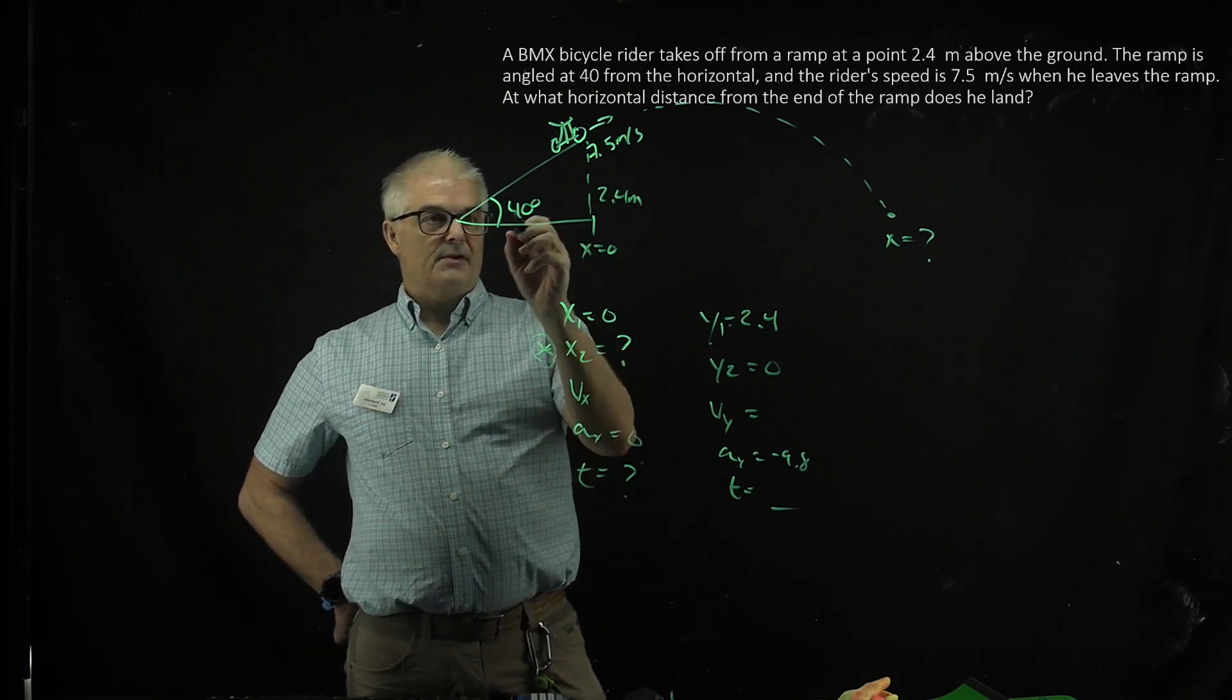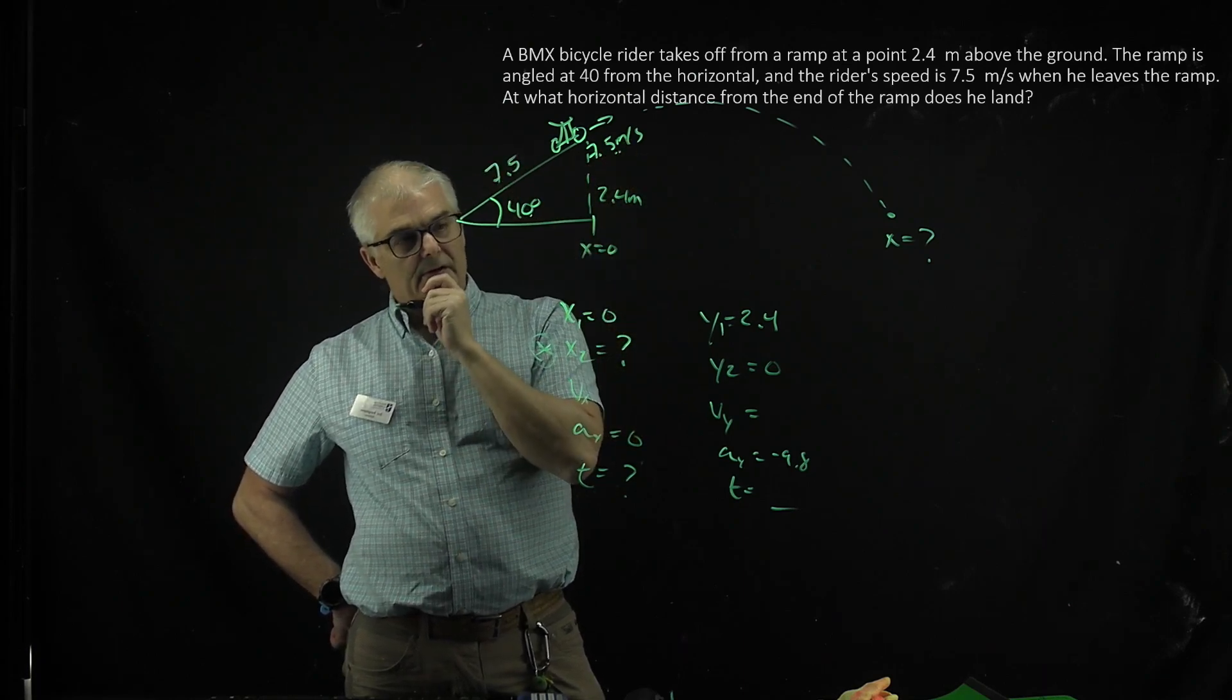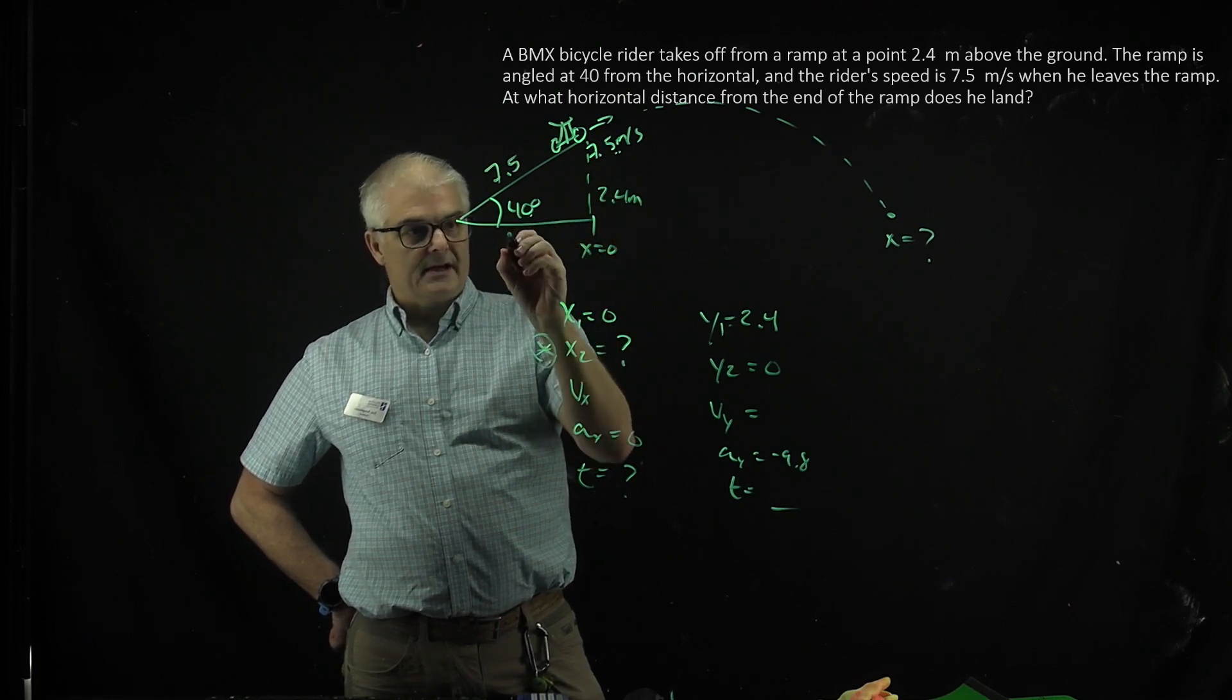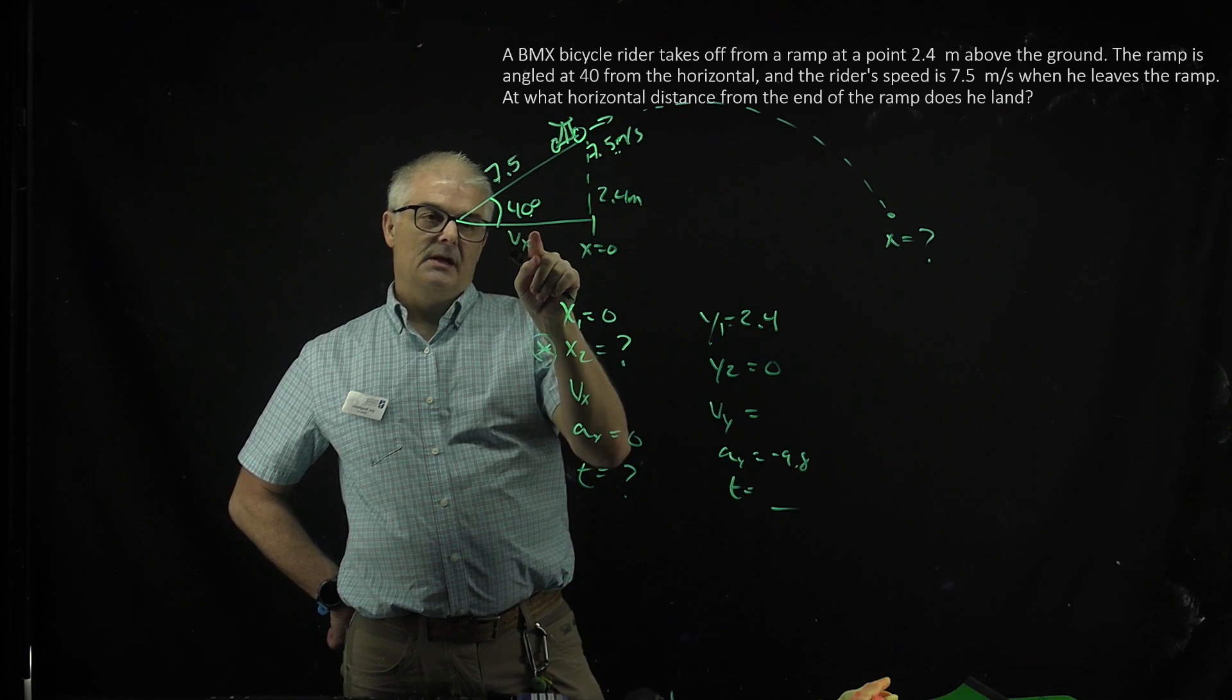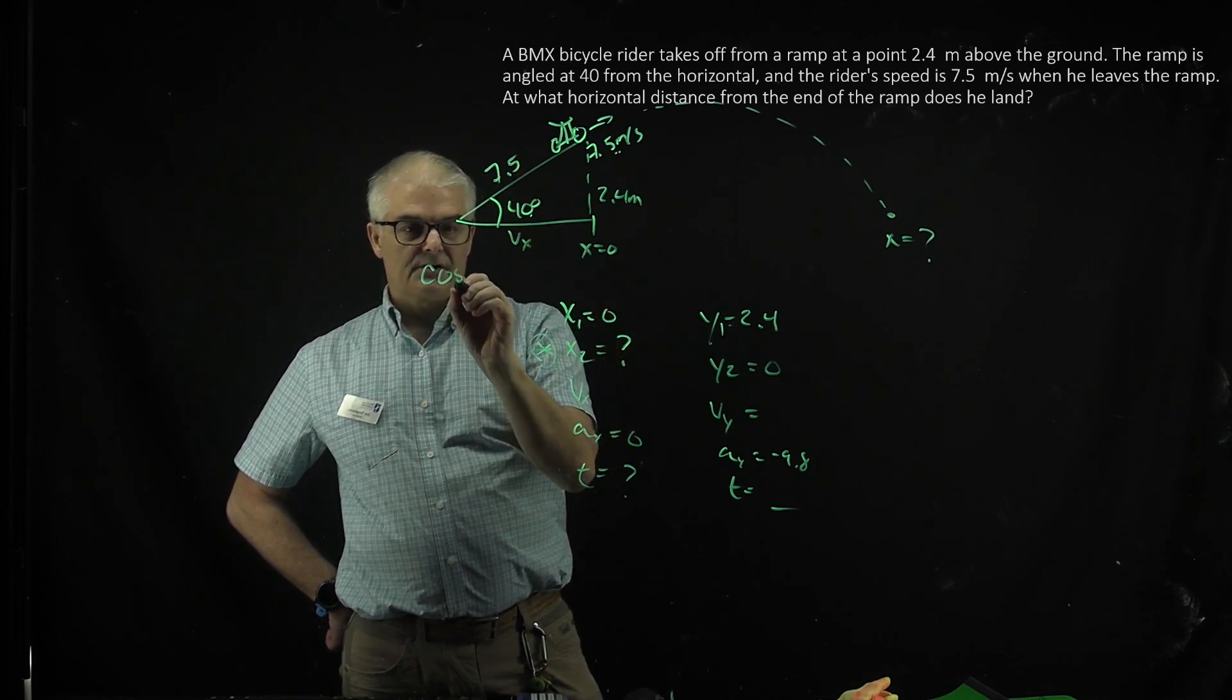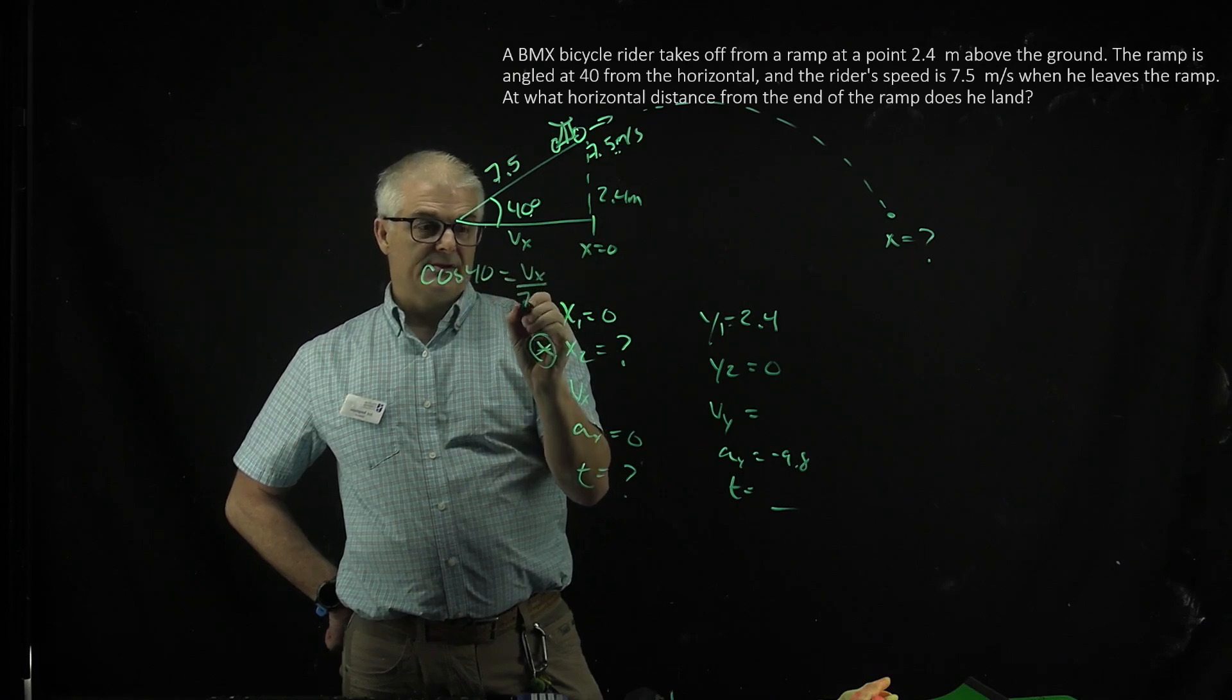If you think about this as a 40 degree angle, 7.5 is really the hypotenuse of your triangle. So use SOHCAHTOA to find the vx. So this is vx, this is the cosine, adjacent over hypotenuse. So you'd say cos of 40 equals vx over 7.5.